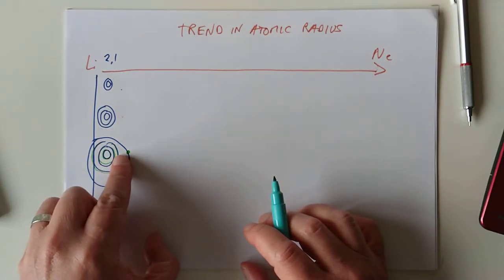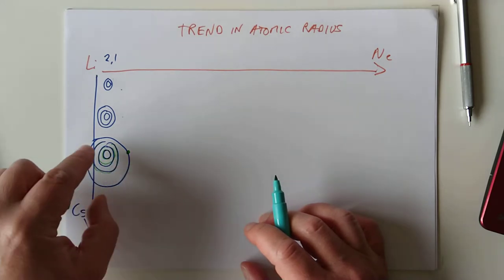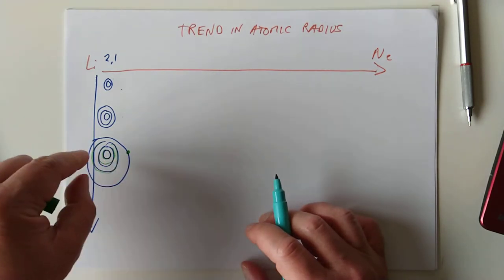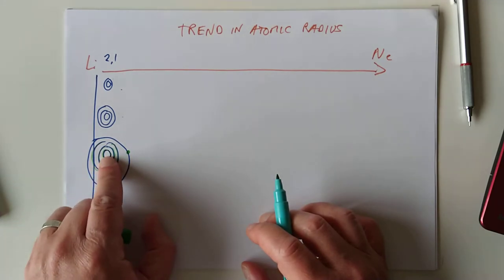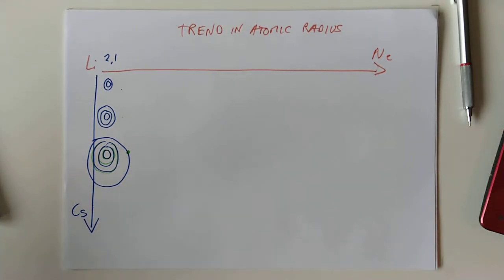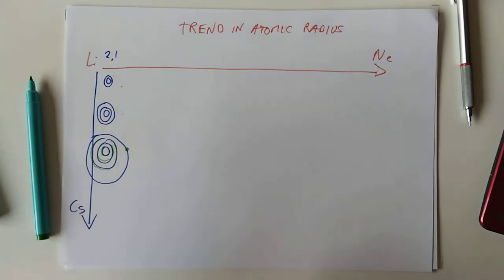...which means that the electron sees a reduced nuclear charge, effectively. Because the nucleus is positive, of course, and all these layers are negative, they act like a shield and they reduce the attraction between this outer electron and the nucleus, which means it can escape further and further away. I do apologise. So, that's the trend going downwards, which probably you managed to get anyway, no problem at all.